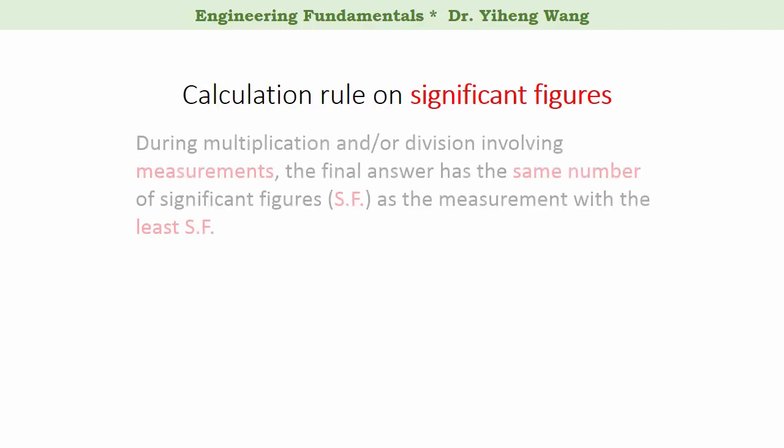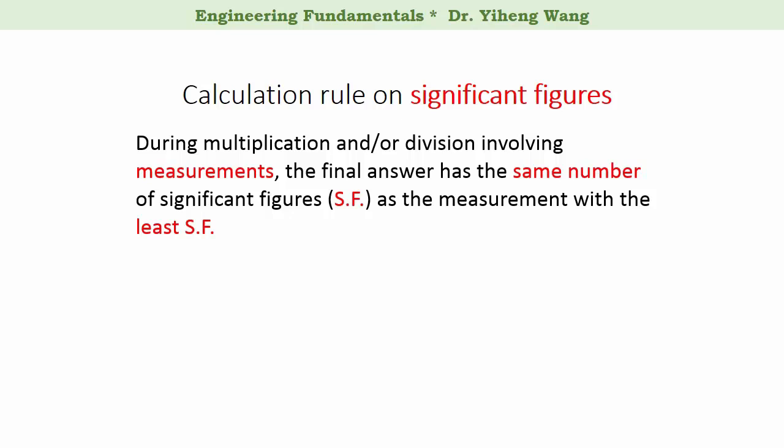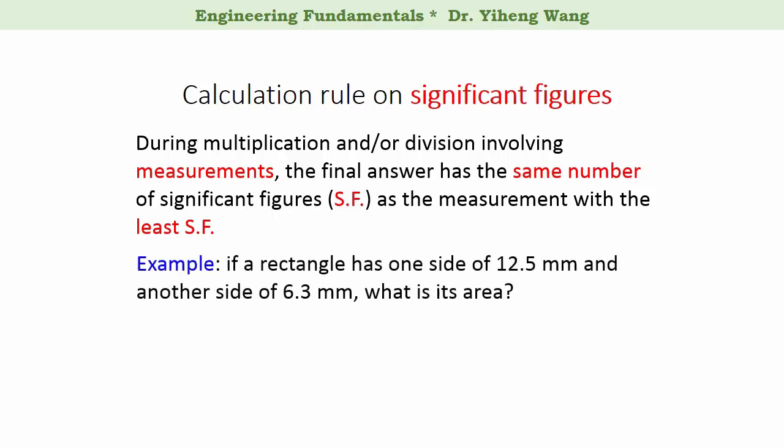It states that during multiplication and/or division involving measurements, the final answer should have the same number of significant figures as the measurement with the least significant figures. For example, if a rectangle has one side of 12.5 mm and another side of 6.3 mm, and we assume both of these two numbers are measurements obtained through some measuring tools, what is the area of this rectangle?